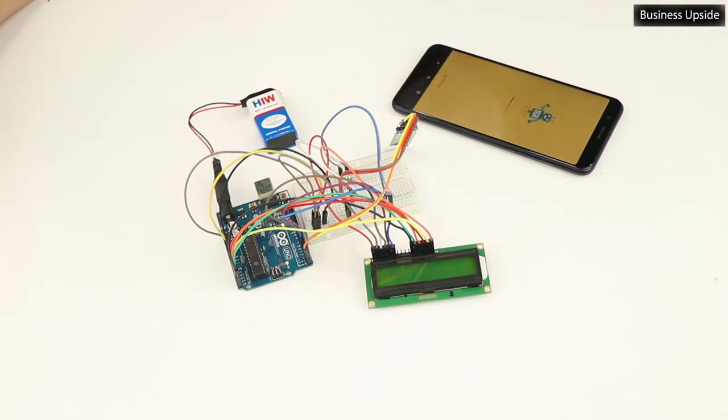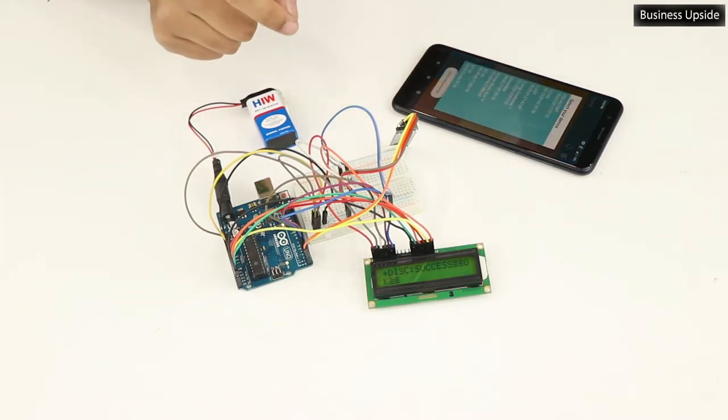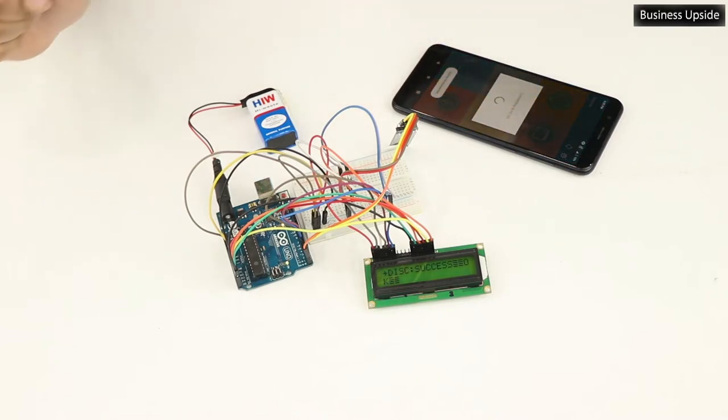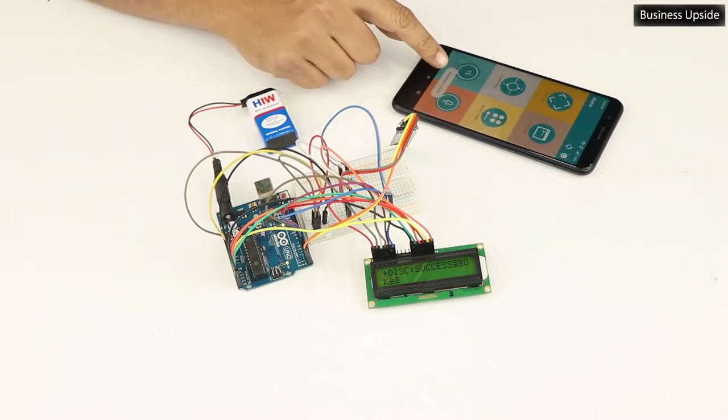Turn on Bluetooth and pair with HC05. If a password is needed, use 1234. Turn on the application, click the refresh button, and select HC05 to connect.